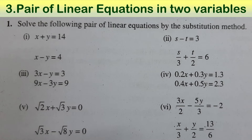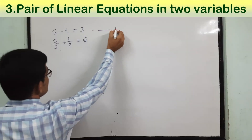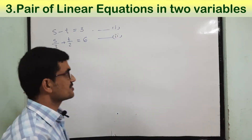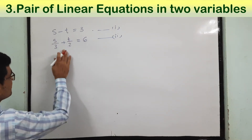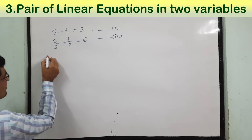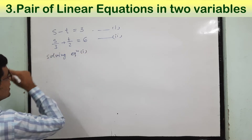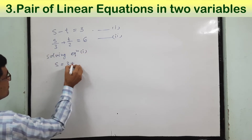The first question is very easy and you can solve it. Question number 2 has two variables s and t: s minus t is equal to 3, and s by 3 plus t by 2 is equal to 6. We have these two equations and we have to solve by the substitution method. Solving equation 1, we can write s is equal to 3 plus t.